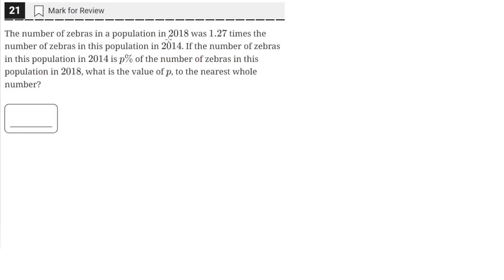The number of zebras in a population in 2018 was 1.27 times the number of zebras in this population in 2014. If the number of zebras in this population in 2014 is p% of the number of zebras in this population in 2018, what is the value of p raised to the nearest whole number?